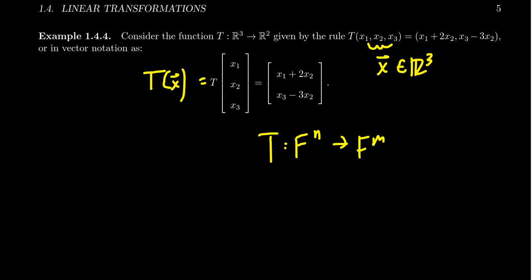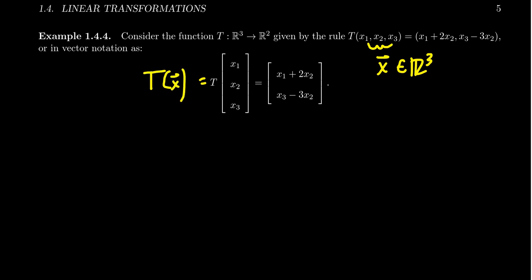This isn't something we're going to show explicitly, but it is a true fact. We're going to show that this is a linear transformation using the definition of a linear transformation. A function is a linear transformation if it preserves vector addition and scalar multiplication. So our first task is to show T is linear.